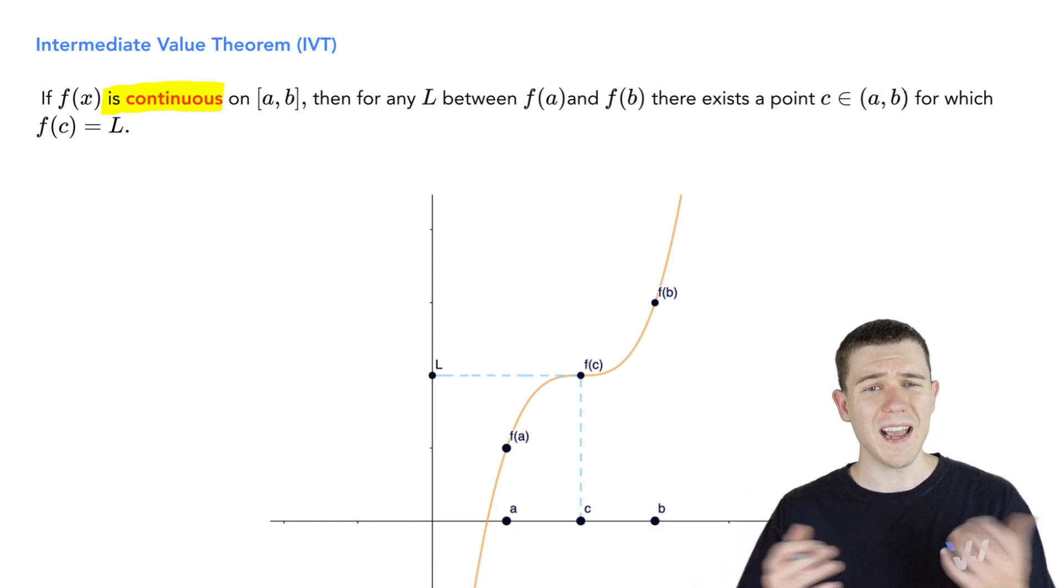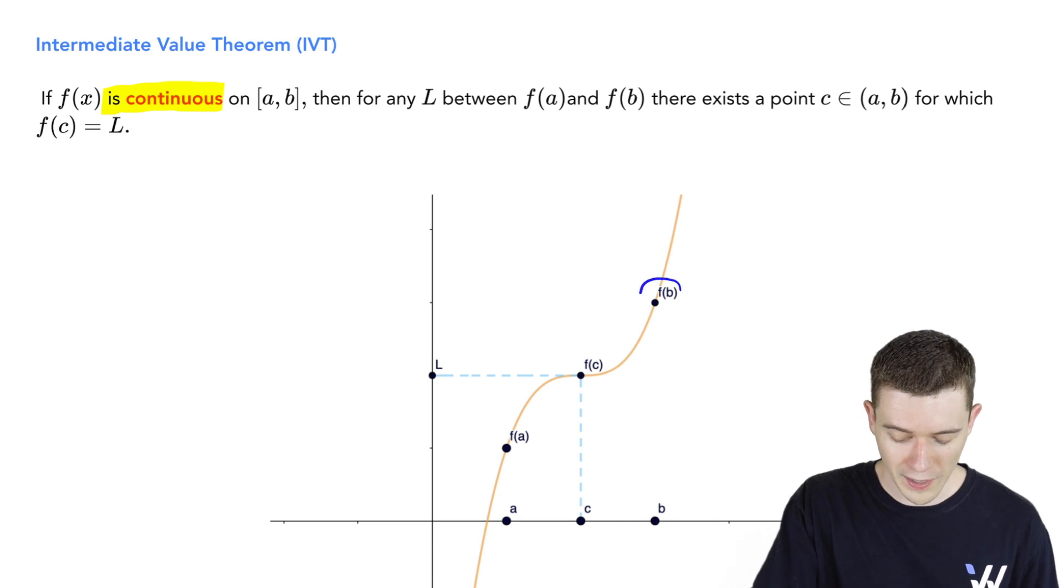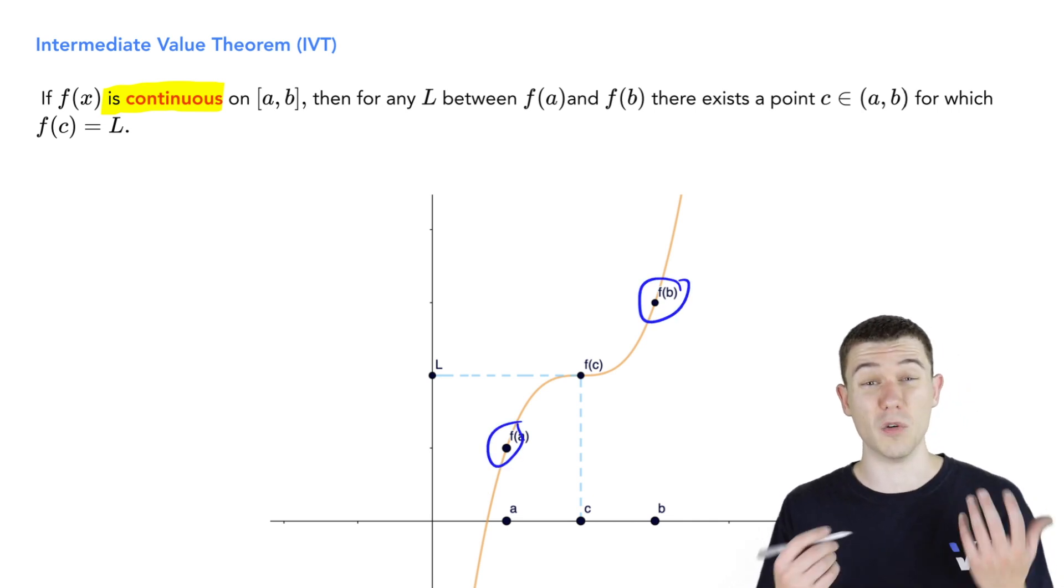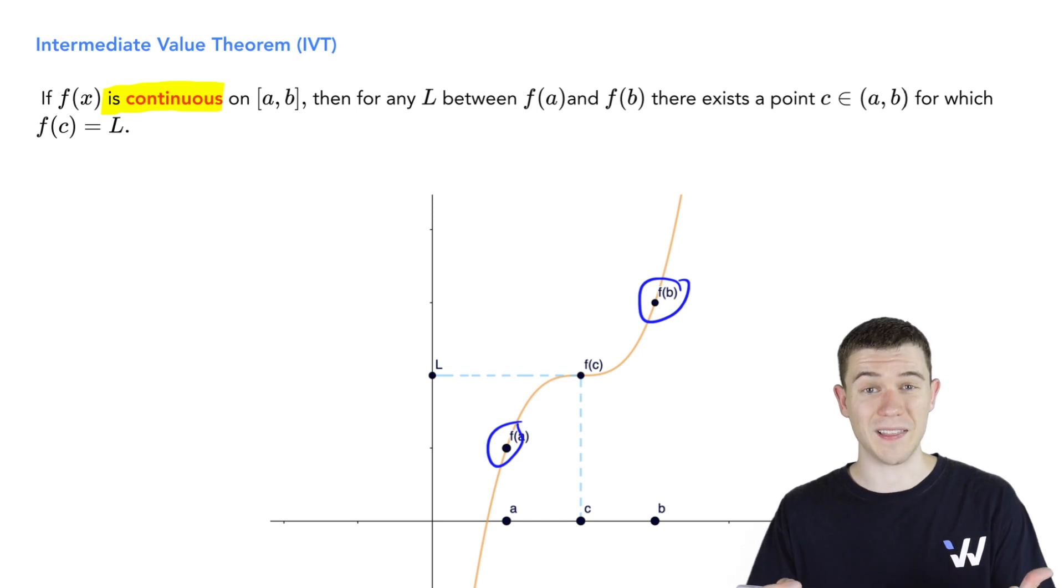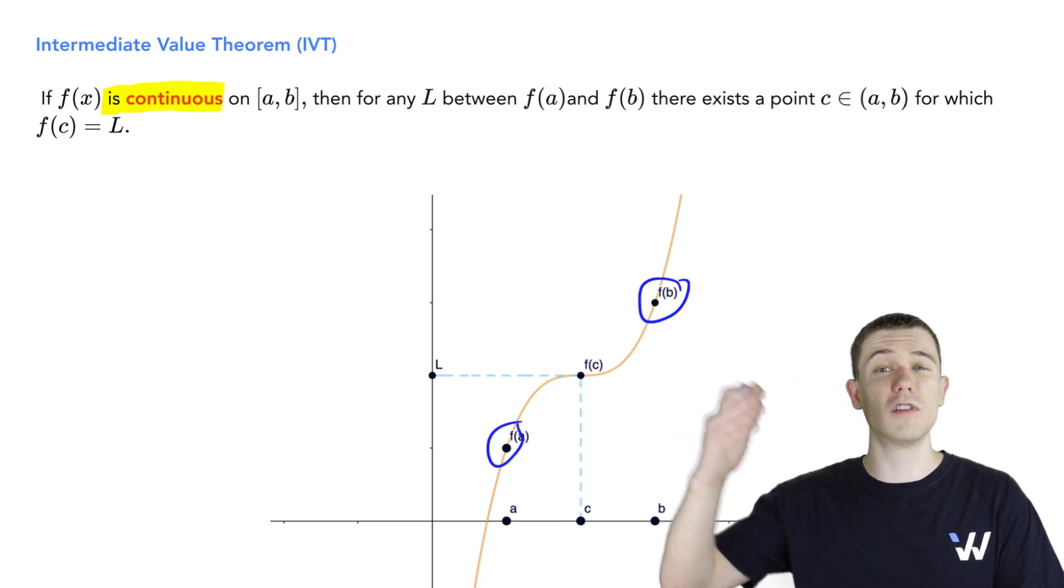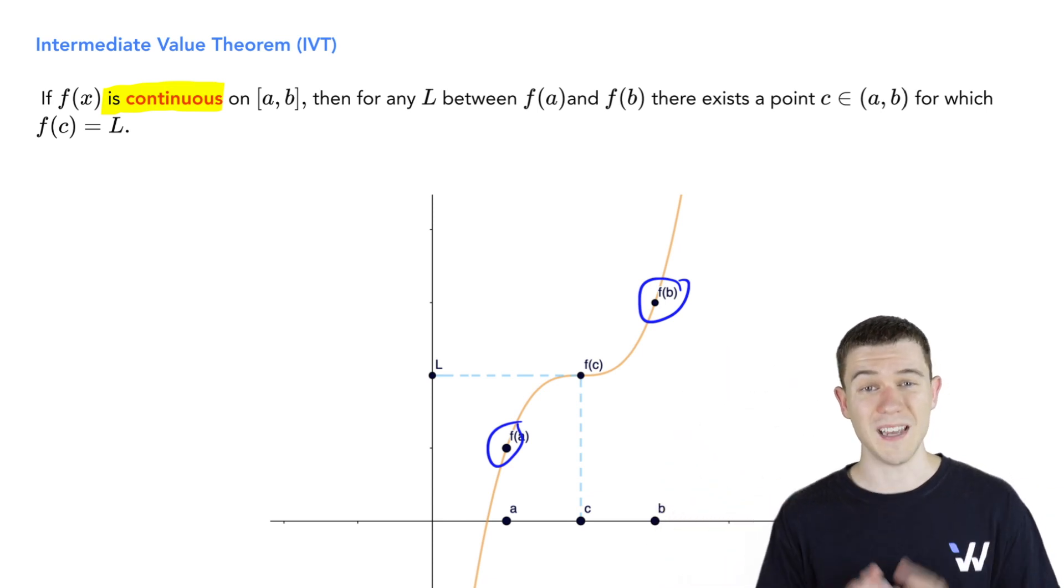So what we're saying is that any value between f of b and f of a in the y direction, our function should hit that. It makes a lot of sense because if our function's continuous, it has no breaks or gaps, it should cover all those values in between.